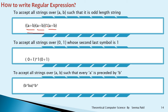To accept all strings over {0, 1} whose second last symbol is 1: write the second last symbol 1, then the last symbol as (0 + 1), and before that there can be any number of 0s and 1s, so write (0 + 1)*. For all strings over {a, b} such that every A is preceded by B: write BA first, then any number of B's can follow. Whenever A occurs, before it there is always B.